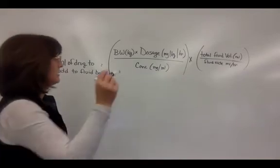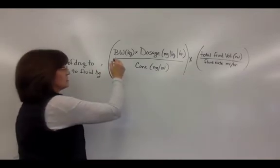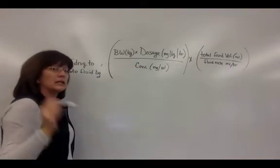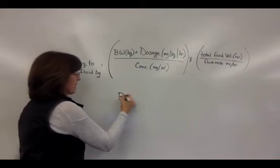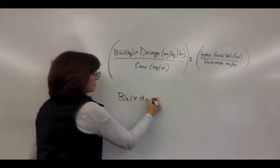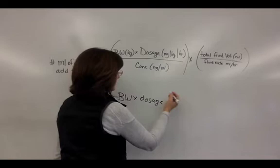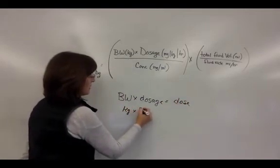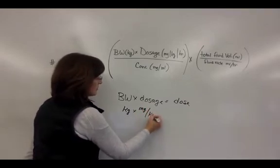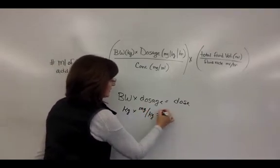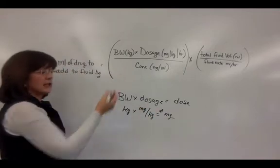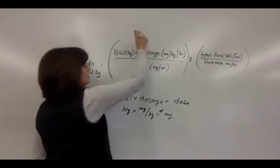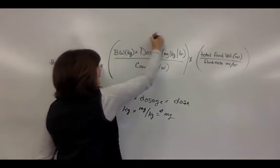One thing to mention: if you recall, body weight times dosage rate equals dose. So kilograms times mg/kg gives you the number of milligrams. In this case, instead of seeing body weight and dosage rate separately, you may see something expressed in milligrams per hour.